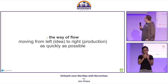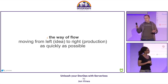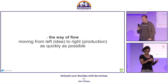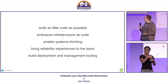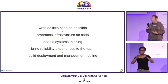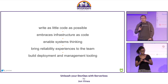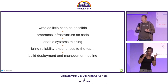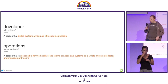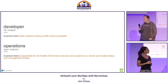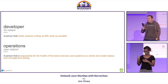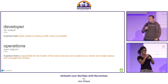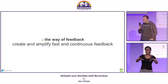Let's start with the way of flow — moving from left to right as quickly as possible. This is an area where serverless really excels. The impact on our people is that developers start writing as little code as possible and need to embrace things like infrastructure as code, while operations people can enable systems thinking, bring reliability experience to the team, and help build deployment and management tooling. Our definitions extend: a developer is now a person that writes as little code as possible, and operations is now responsible for the health of team services and systems as a whole.